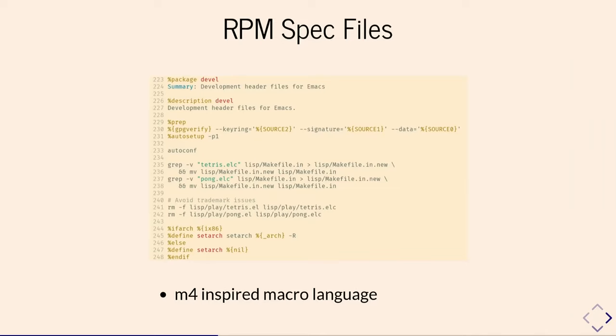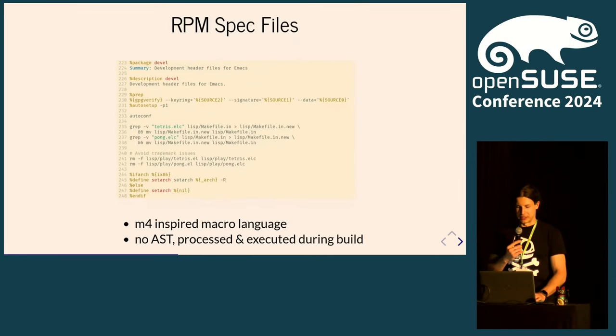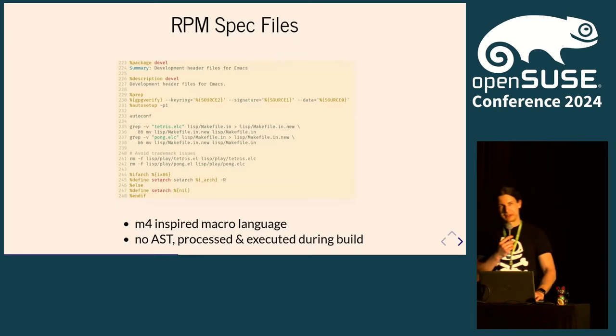Since RPM has historically grown into what it is, the spec files are made to build RPMs. When it was built, no one thought about creating something like an AST, so the whole thing is parsed and then executed. Nowadays you can make RPM pre-process it, but it's really not intended for tooling consumption.